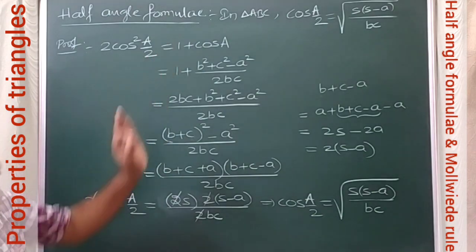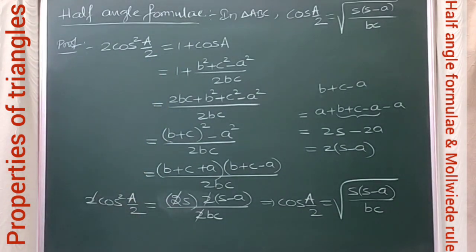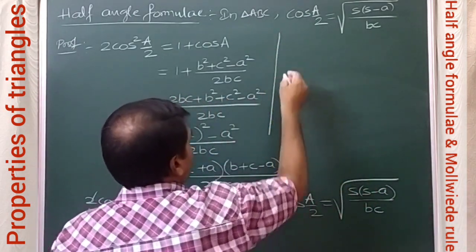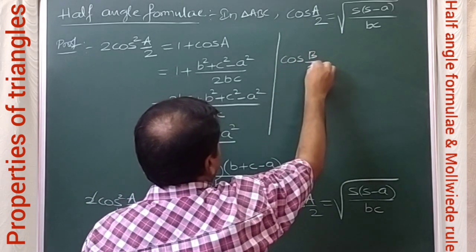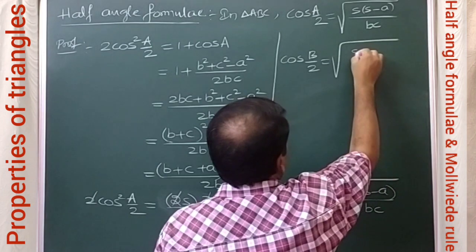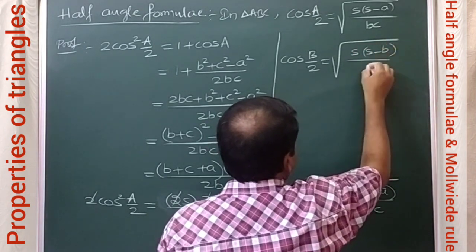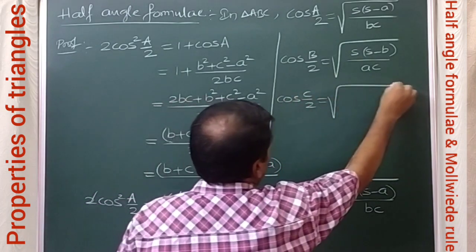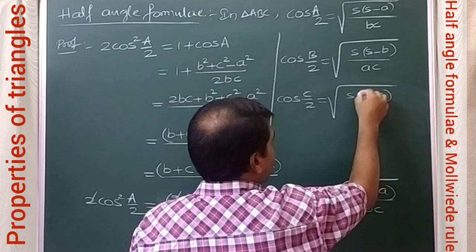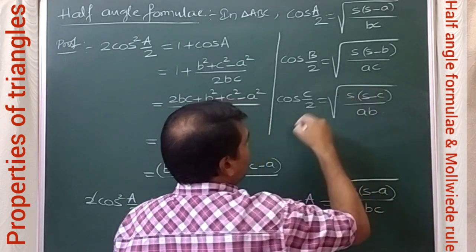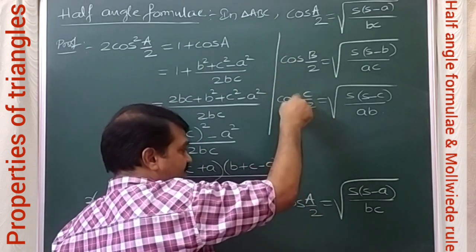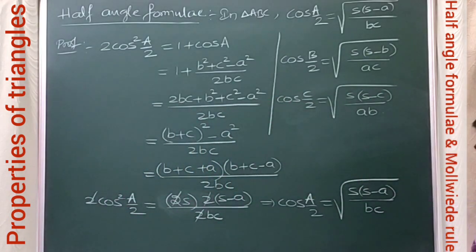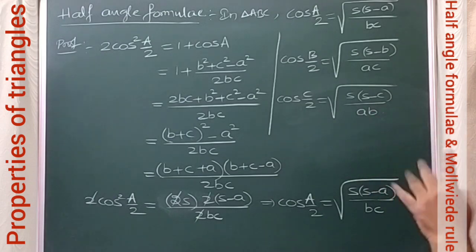Similarly we can derive two more formulas: cos(B/2) = √[s(s − b) / ac], and cos(C/2) = √[s(s − c) / ab]. So we have now completed sin(A/2), cos(A/2), sin(B/2), cos(B/2), sin(C/2), and cos(C/2).